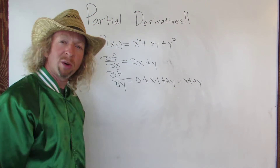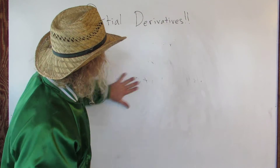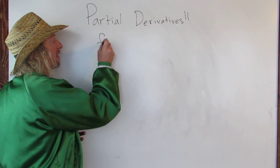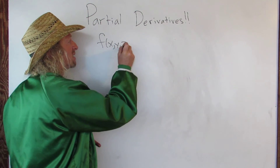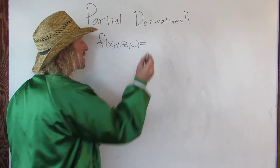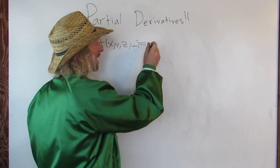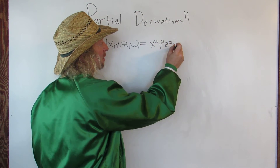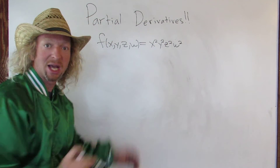Maybe let's do one more example just so you really get it. Let's do a function of four variables: f of x, y, z, w. And how about x squared plus y squared plus z squared plus w squared. Let's just do that — keep it simple.